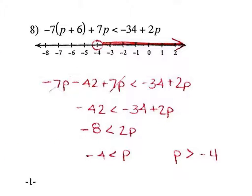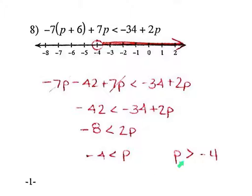Question 8: start with the distributive property. Just distributing a negative number doesn't flip the sign — it's only if you multiply both sides. I noticed negative 7p and positive 7p on the same side cancel each other out, leaving negative 42. I added 34 to both sides to get negative 8, then divided both sides by 2 to get negative 4. Since I'm dividing by a positive number, the symbol does not flip. I had to turn everything around so that p ends on the left, so it reads p is greater than negative 4. No equal sign means open circle, and greater means shade to the right.